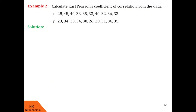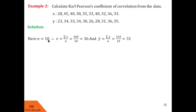Now let us go ahead to the next example. Once again we are asked to find Karl Pearson's coefficient of correlation from the given data. Counting the number of data points: 1, 2, 3, 4, 5, 6, 7, 8, 9, 10 — once again n is 10. We calculate x bar as summation x upon n, and found summation x is 360, so x bar equals 360 upon 10 equals 36. Similarly, y bar is found to be 31.